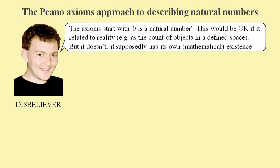The Peano axioms start with zero is a natural number. This would be okay if it related to reality, such as being the count of objects in a defined space. But it doesn't. It supposedly has its own mathematical existence.